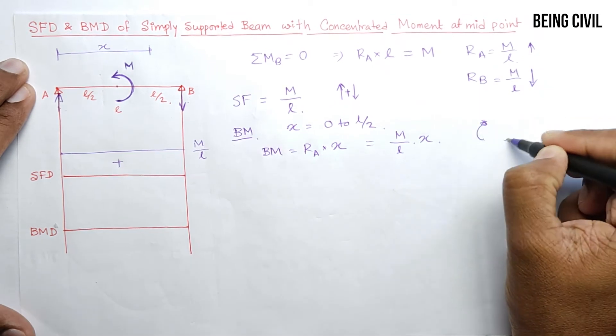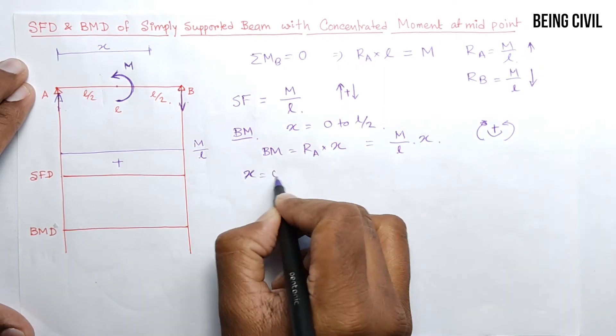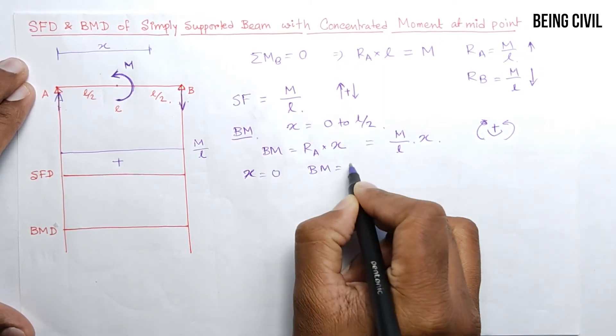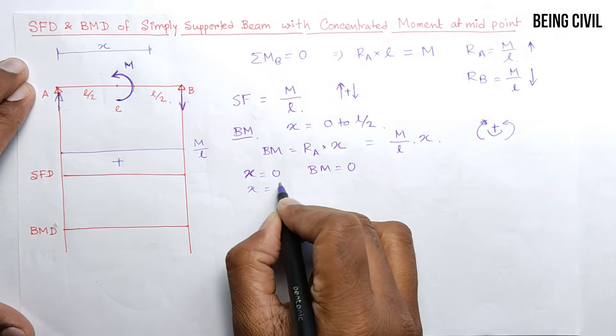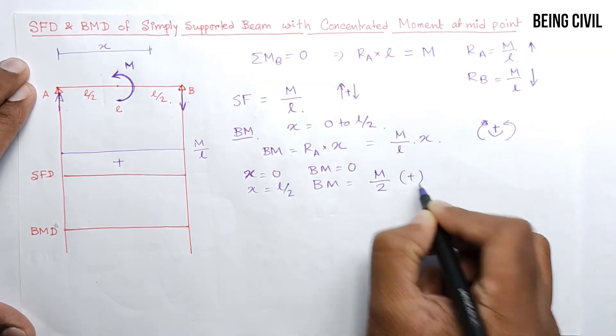At X equals 0, bending moment equals 0, and at X equals L/2 you get the bending moment M/2 positive.